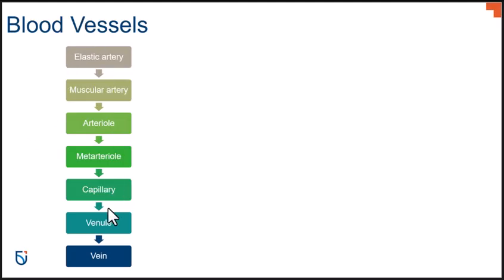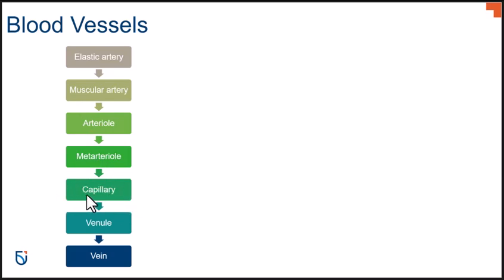This flowchart shows that starting at the level of the heart, blood moves from elastic arteries into muscular arteries, then into arterioles, then into meta-arterioles. At the capillary level, diffusion occurs, and then we clear that tissue through venules — small veins — and then back into veins and back to the heart.